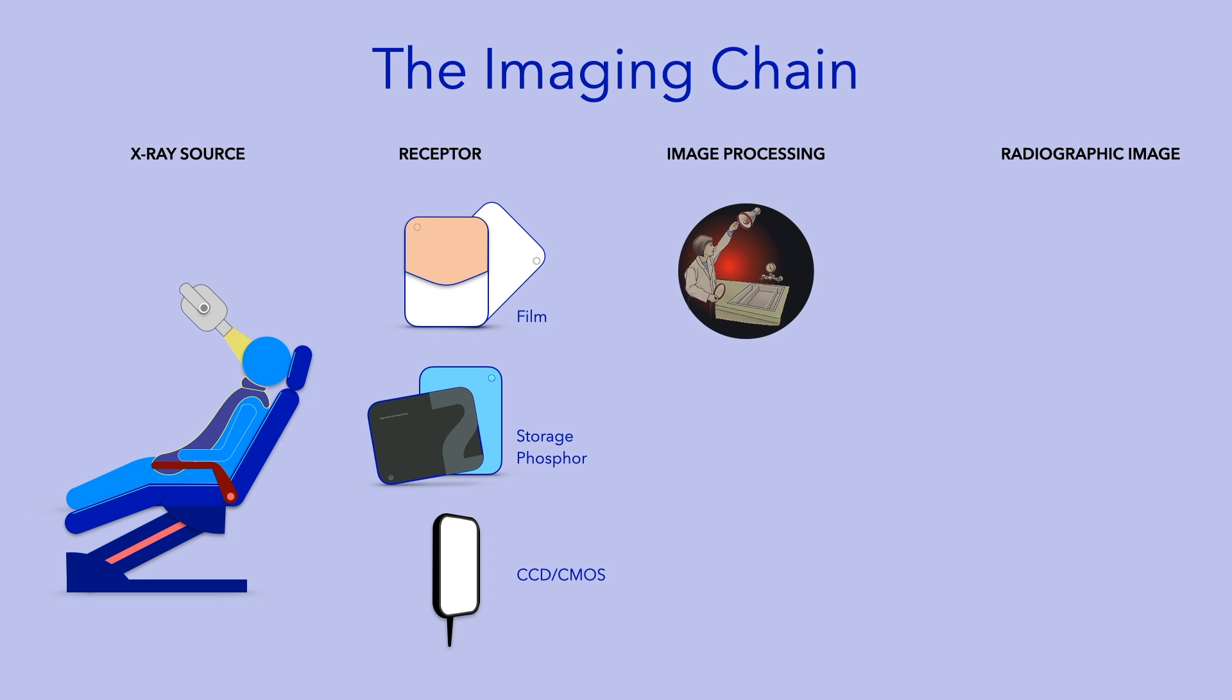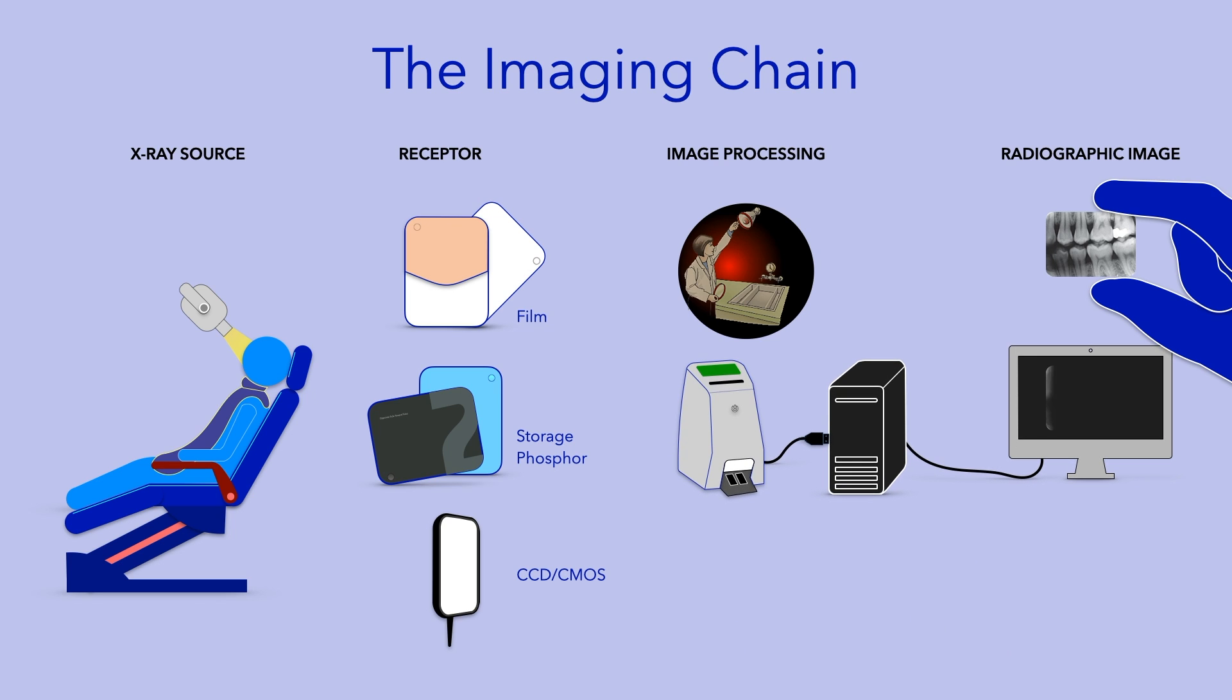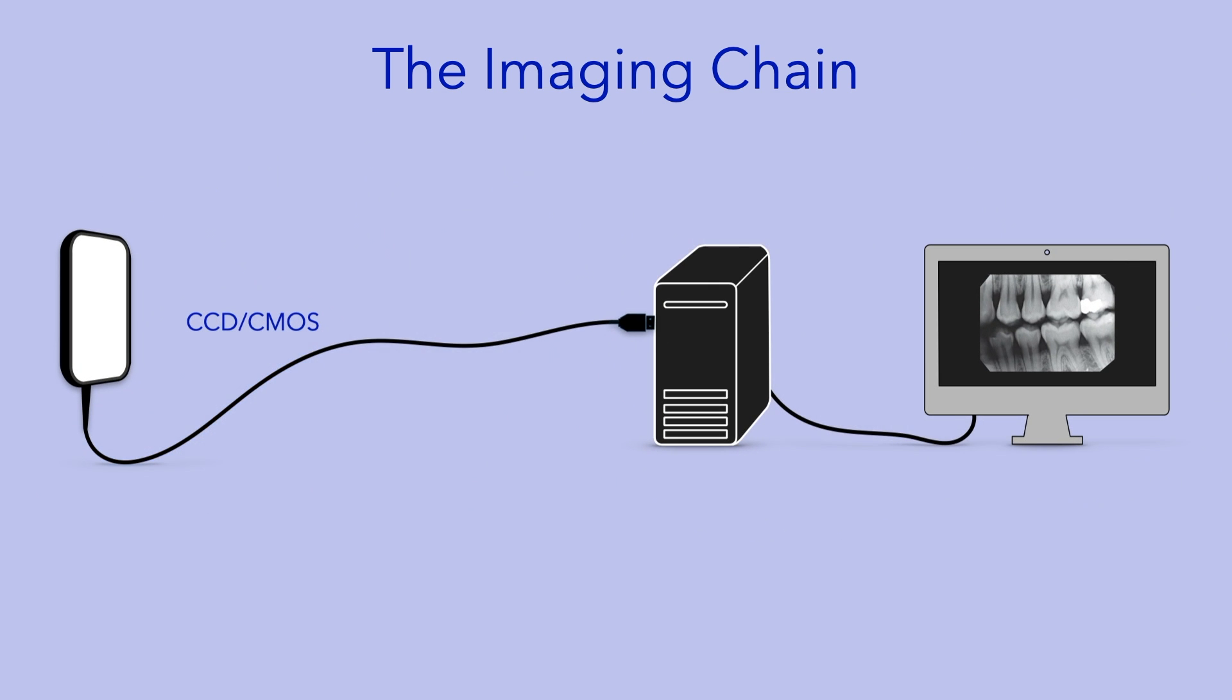Following exposure, radiographic film undergoes chemical processing to make a physical radiographic image that can be handled. Image formation with storage phosphor or CCD or CMOS-based technologies involves computer processing to make a digital image. Thus, the latter two technologies are referred to as digital imaging, while film is referred to as analog imaging. This video will focus on the use of CCD and CMOS-based technologies in dento-maxillofacial imaging.